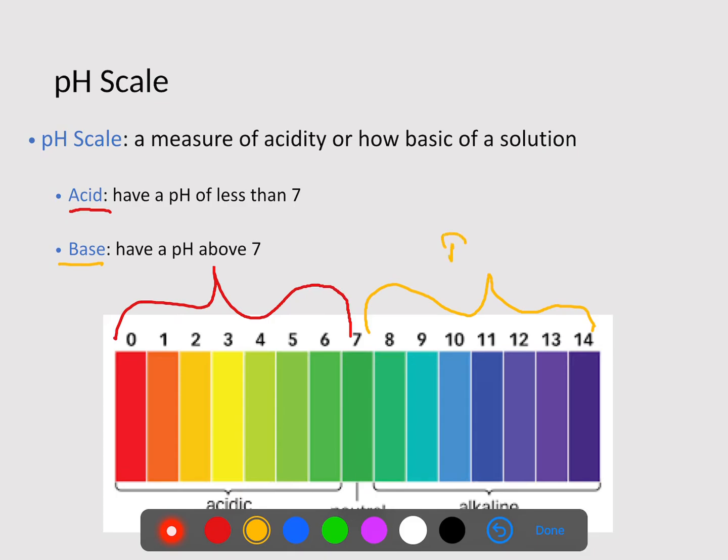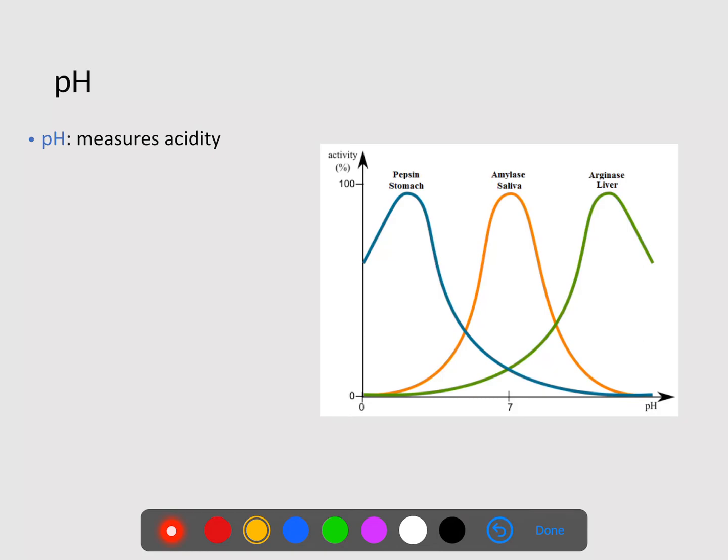So in this scenario, again, as we are shifting away from seven, seven is just neutral. So again, seven is pure water and has a pH of seven.